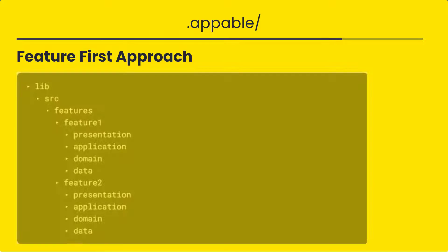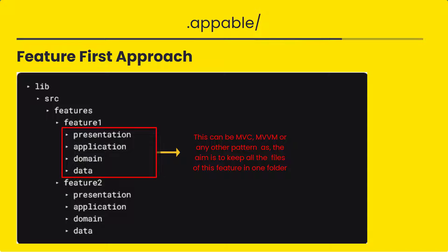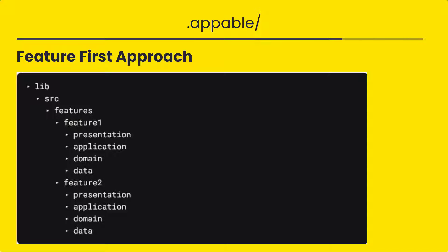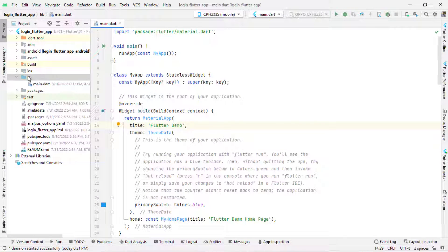In the feature-first approach, we don't follow layers at the top; instead, layers will be inside the features. For example, inside feature one you have presentation, application, domain, and data. Let's say we have an authentication feature — for authentication, we have data coming from Firebase, a domain layer with models related to user login, signup, and forgot password, an application layer with services, and a presentation layer with user interfaces like login and signup screens, plus controllers holding the logic. Examples of features could be: authentication, shopping cart, orders, reviews, and checkout.